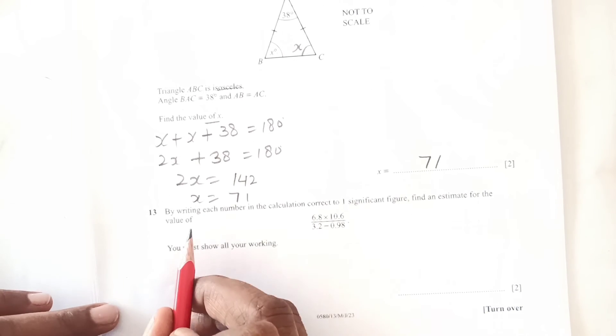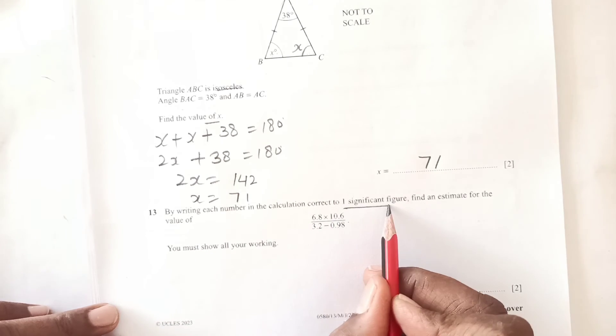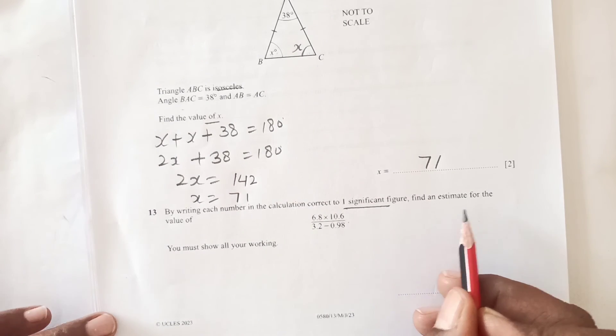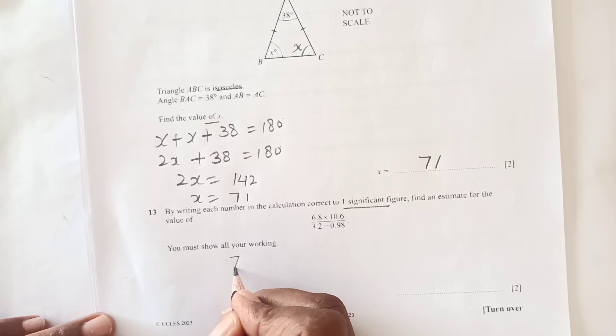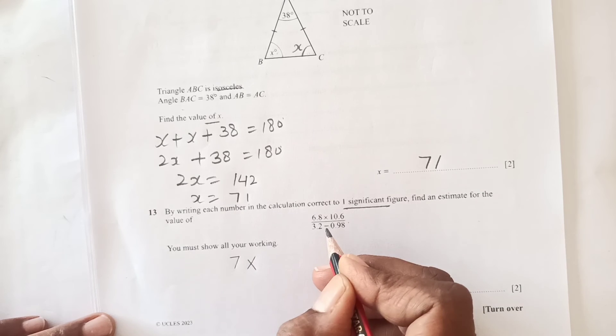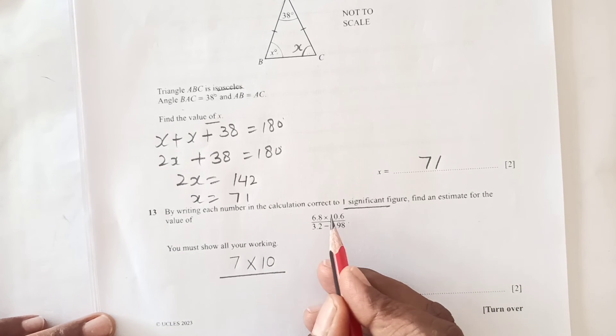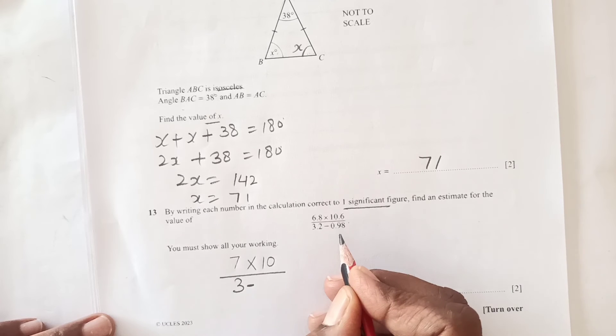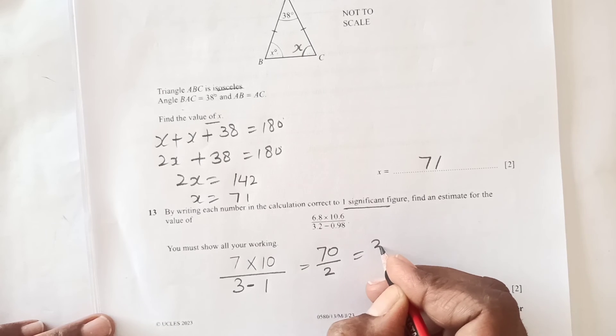Number 13: by writing each number correct to one significant figure, find an estimate for the calculation. 6.8 will be 7 to one significant figure, 10.6 is going to be 10. This is 3 minus 1. So 70 over 2, which is 35.